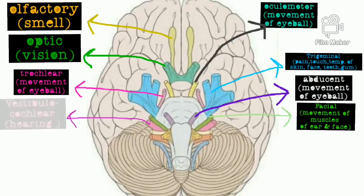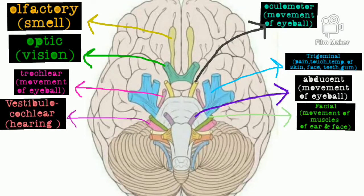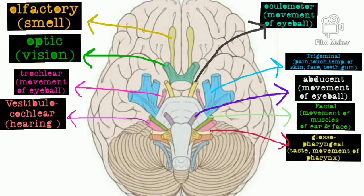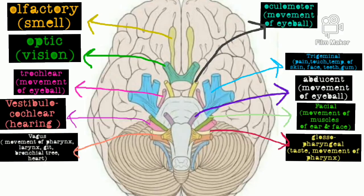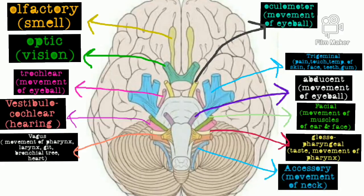Vestibulocochlear nerve, whose function is hearing. Glossopharyngeal nerve, whose function is taste and movement of pharynx. Vagus nerve, whose function is movement of the heart. Accessory nerve, whose function is movement of the neck.